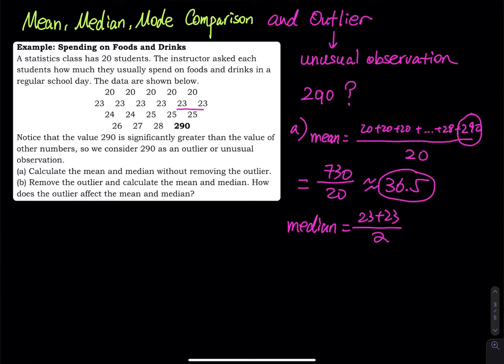So if you count carefully, the 10th and the 11th number is right here. So the average of 23 and 23, so the median equals 23 plus 23 divided by 2, that is still equals to 23. Which number is closer to the truth? Do you use the 36.50 or you use the 23? Everybody will say 23 is closer to the truth because that is how much people spend on average.